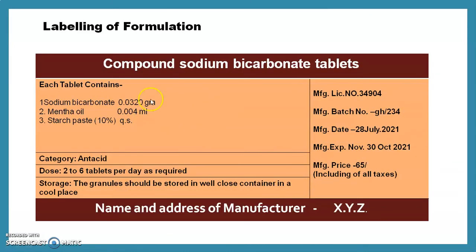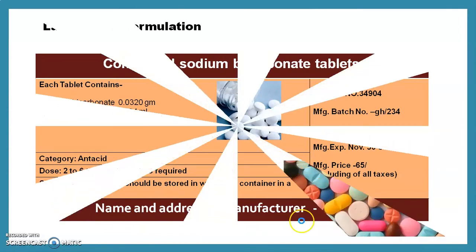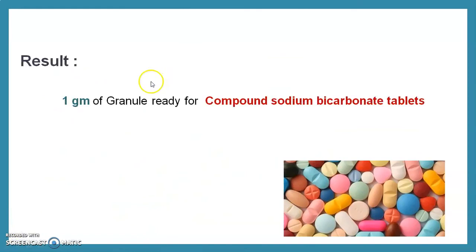The label of the formulation should state: 'Compound Sodium Bicarbonate Tablet' as the name of preparation at the top. Then the contents per tablet, category — antacid, dose — two to six tablets per day as required, storage — granules should be stored in a well-closed container in a cool place, and manufacturing details such as manufacturing license number, batch number, manufacturing date, expiry date, price, and name and address of the manufacturer.